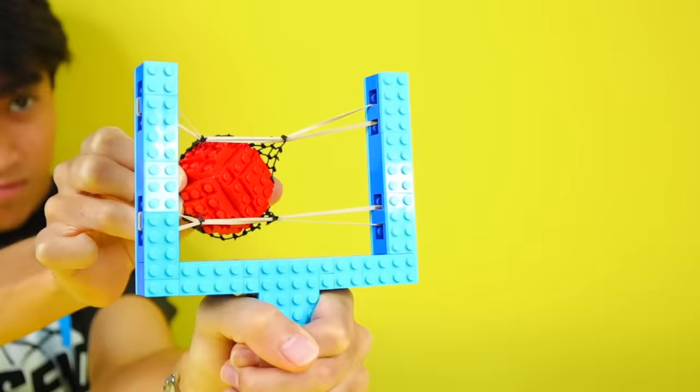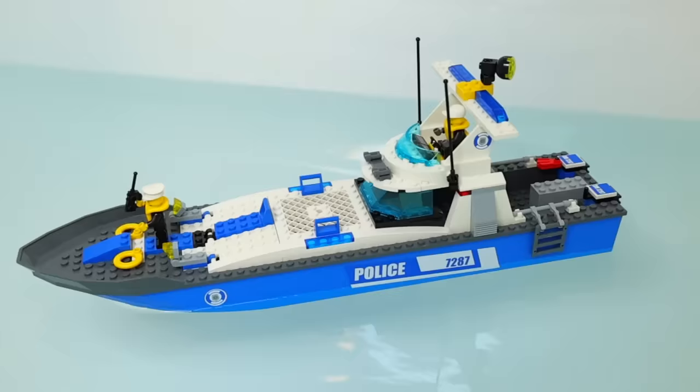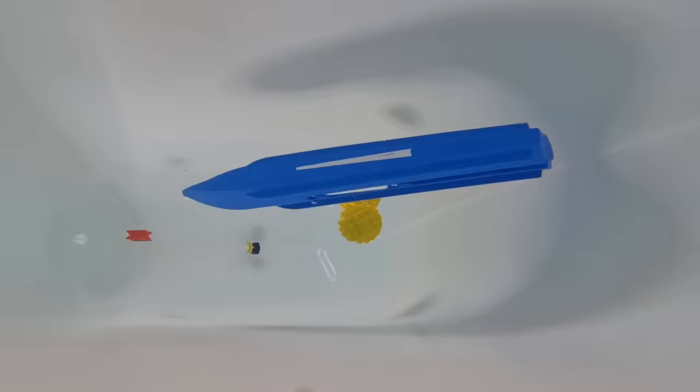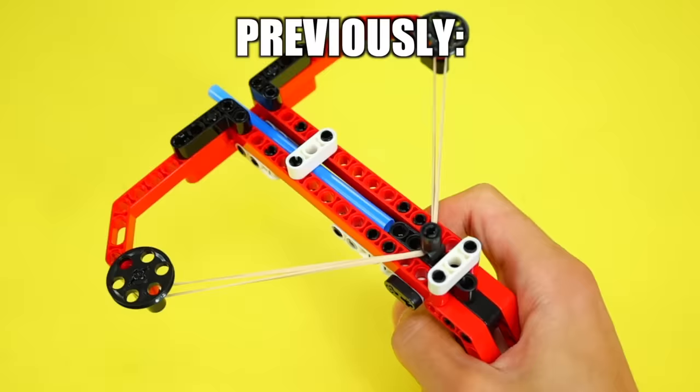Now it's time to actually test out this slingshot. So here's a Lego police boat that floats in water, and let's try to sink it. Whoa, this boat is built different.